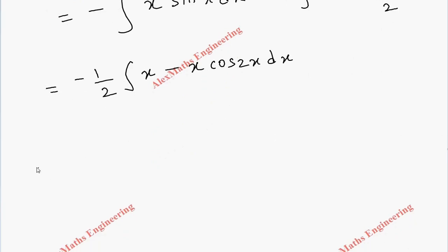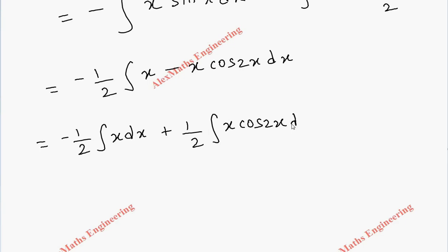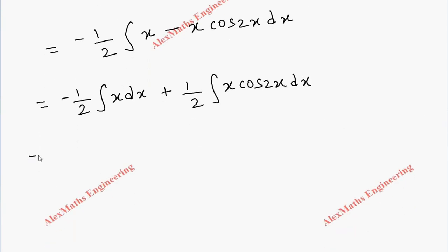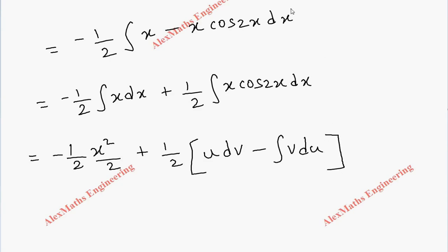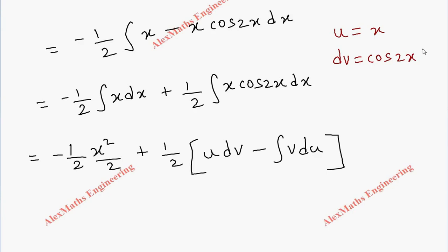We split this into two integrals: -1/2 · ∫x dx + 1/2 · ∫x cos 2x dx. The first part is a direct integration. For the second part, we use the IBP formula ∫u dv = uv - ∫v du, taking u = x (algebraic) and dv = cos 2x dx. Then du = dx and v = sin 2x / 2.